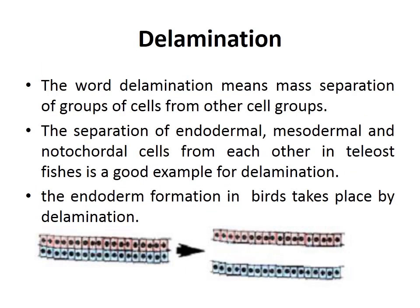Delamination means mass separation of groups of cells from other cell groups — it is the splitting or detaching of a layer when cells grow at a faster rate, causing one layer to split off. The separation of endodermal, mesodermal, and notochordal cells in teleost fish is a good example of delamination. Endoderm formation in birds also takes place by delamination.